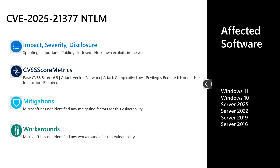And finally, CVE-2025-21377. This is an important spoofing vulnerability in NTLM. This one was publicly disclosed prior to release, but there are no known exploits out in the wild. It has a base CVSS score of 6.5. The attack vector is over the network, the attack complexity is low. Privileges are not required, but user interaction is required. This one is a little different — it doesn't require a user to fully open or execute a file. A user could select the file or even inspect it with the right-click context option, and that could trigger this vulnerability. There are no documented mitigations or workarounds. Affected software is Windows 10 and 11 on desktop, as well as Server 2016 through Server 2025.